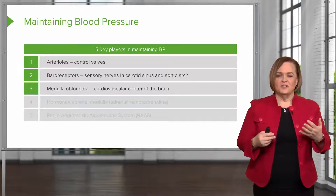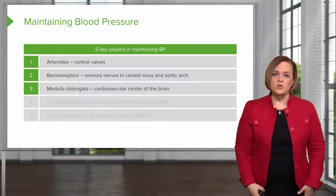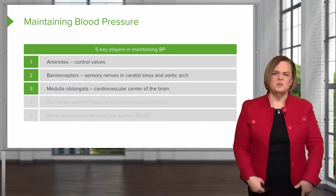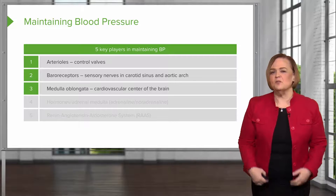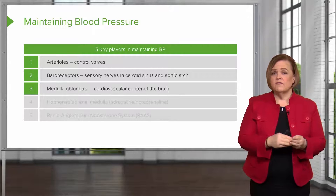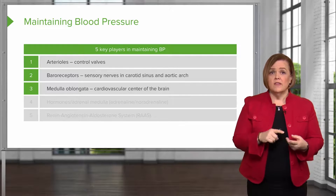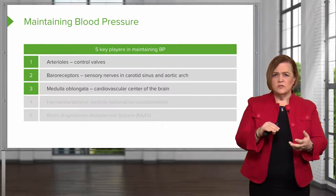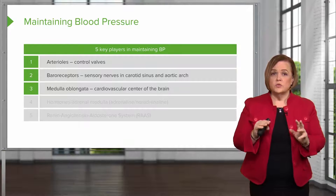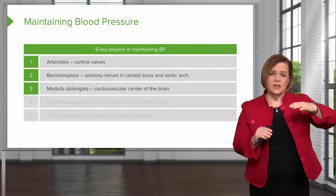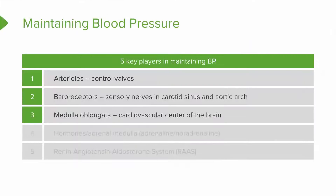Number three is the medulla oblongata — it just sounds cool, right? Go ahead and practice saying it. Medulla oblongata. It is the cardiovascular center of your brain. So we've hit three of the five key players: the arterioles, which are the major control valves; the baroreceptors, the sensory nerves in the carotid sinus and aortic arch that can reset themselves in response to blood pressure; and the medulla oblongata, the cardiovascular center of the brain.